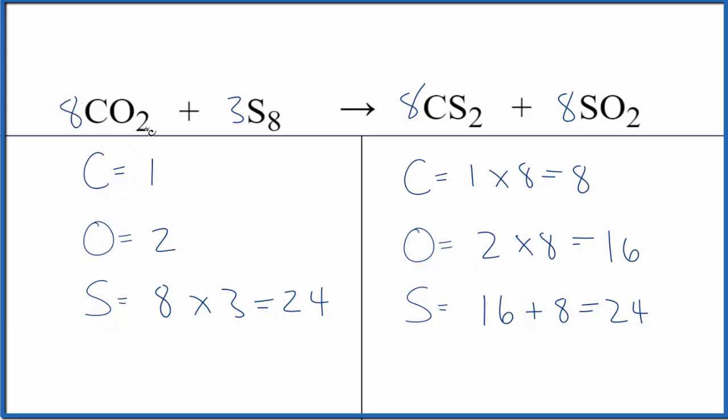One times eight, that balances the carbon atoms, and then two times eight, that gives us 16 and we're done. This equation is balanced. And this was tough. I usually record my videos as I do them. This one I had to stop and try to figure out myself before I made the video. So that's how I balanced the equation CO2 plus S8. There probably are other ways, but this seems to work pretty well.